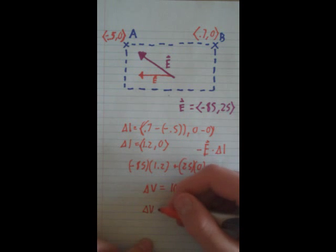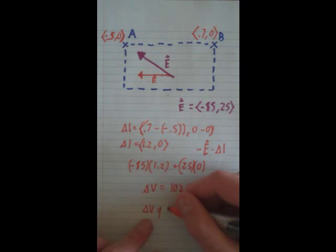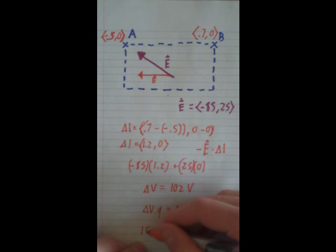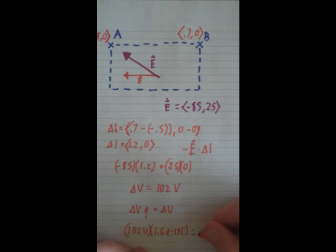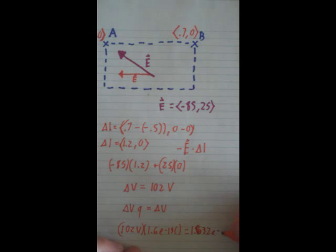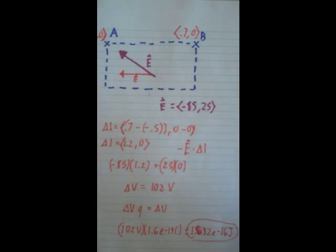Once again, remember that voltage times charge equals energy, so we take 102 volts times 1.6 E to the negative 19th coulombs, and that equals 1.632 E to the negative 16th joules. And that will give us how much energy it takes to move something from there to there. And that's how you do problems with potential difference or potential energy.